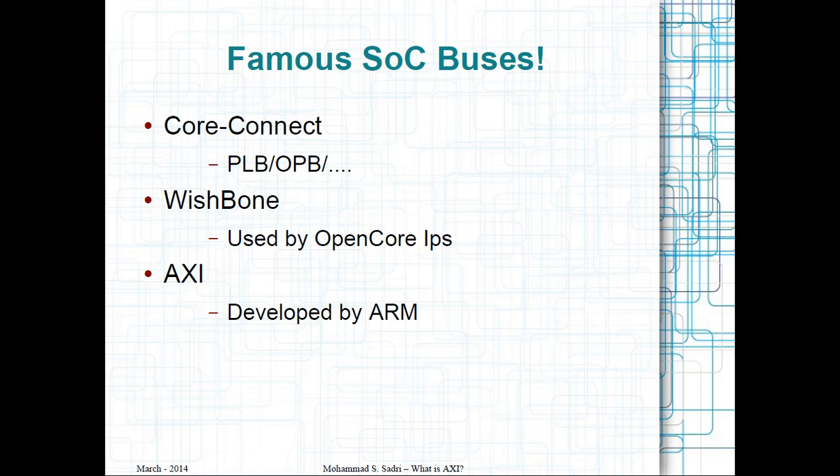AXI is a kind of protocol, a way of signaling through which your modules can talk to the outside world. When you are designing your module, when you are designing your RTL, you will obey the rules of AXI and add AXI interfaces to your module so that it can be used very easily later by other people and by yourself. As we will see, the entire Vivado design flow is based on these AXI interfaces.